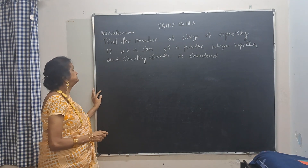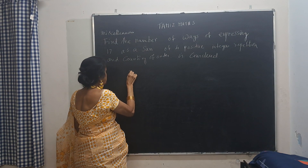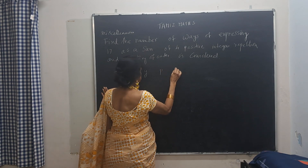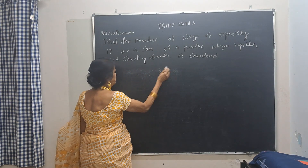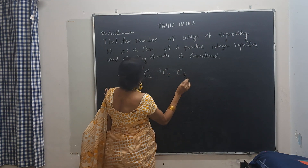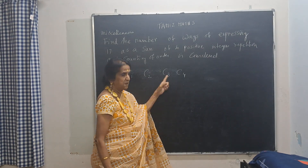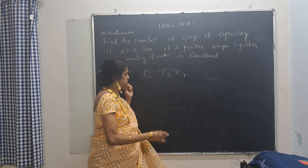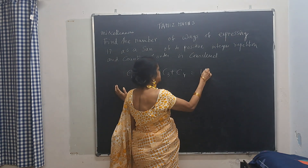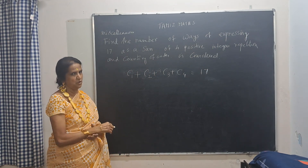I am going to give you two methods. Method 1: I have variables — you can say X, Y, P, Q — or you can say C1, C2, C3, C4. Find the ways of expressing 17 as 4 positive integers, where C1, C2, C3, C4 are all positive. If I add all of them, I should get 17.